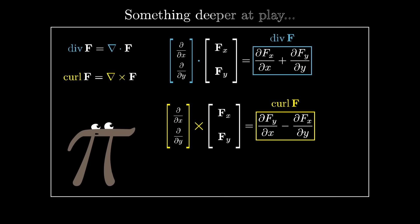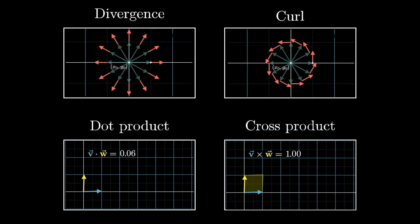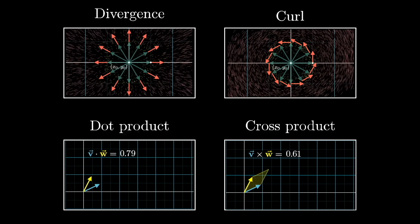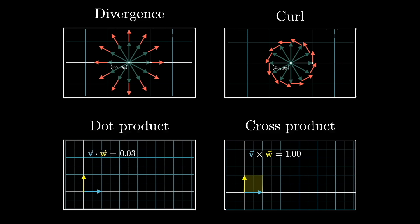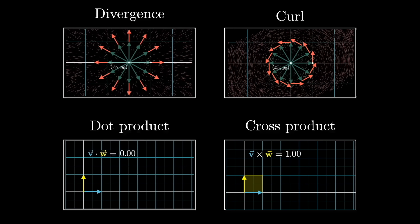But it is actually more than just a mnemonic device, there is a real connection between divergence and the dot product, and between curl and the cross product. Even though we won't be doing practice computations here, I would like to give you at least some vague sense for how these four ideas are connected.